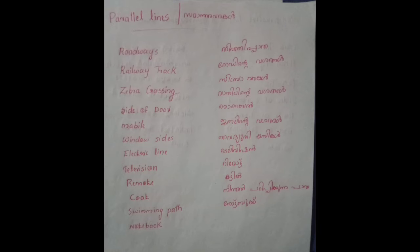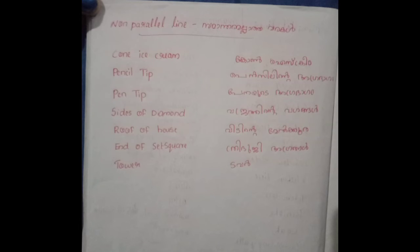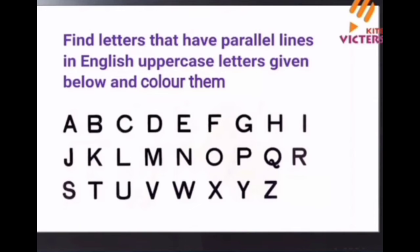Non-parallel lines examples: corn ice cream, pencil tip, pen tip, side of diamond, roof of house, end of set square, tower. Pencil at an angle, fish and tile, and the top. The wing of the table and the cover with the set square.